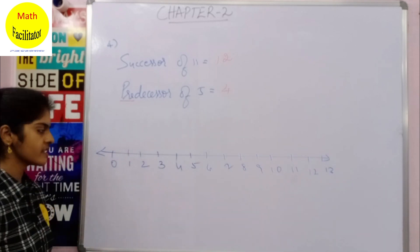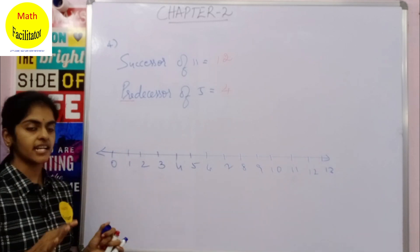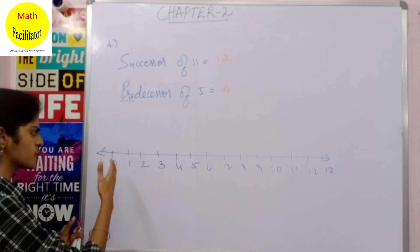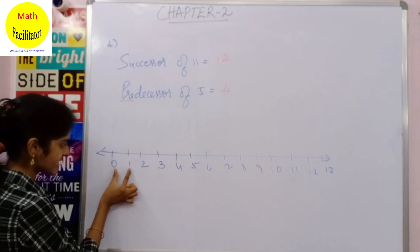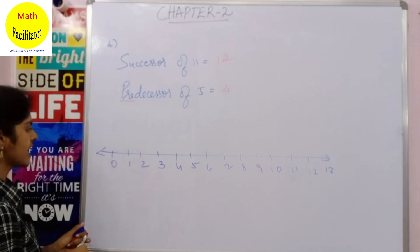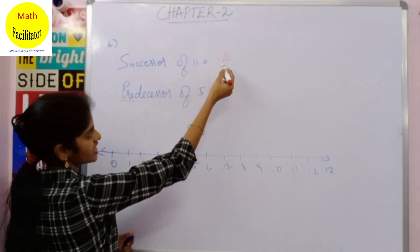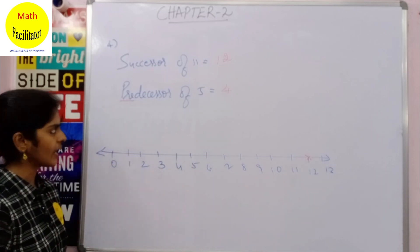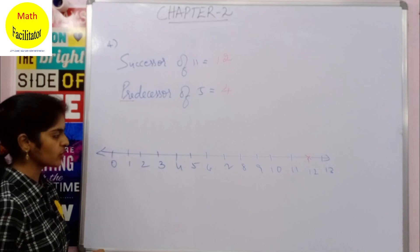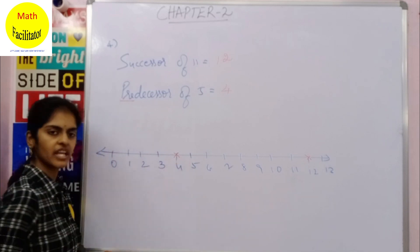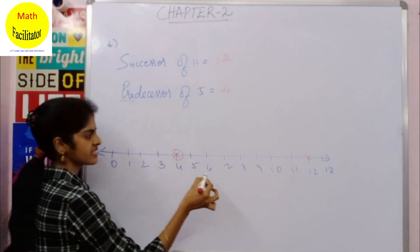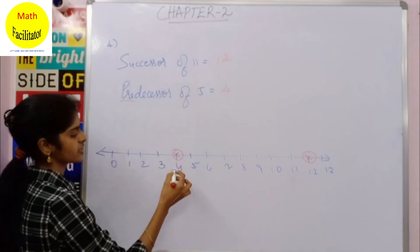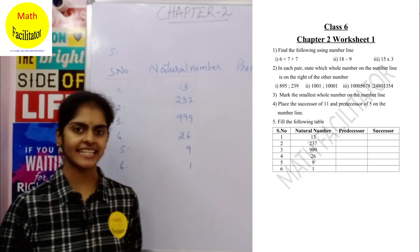Use a scale while drawing the number line so that the distances are equal. The successor of 11 is 12 — you find 12 here on the number line. The predecessor of 5 is 4 — you find 4 here. That is how you mark the successor of 11 and predecessor of 5 on the number line.